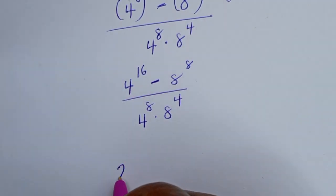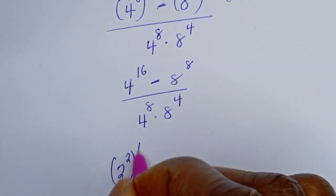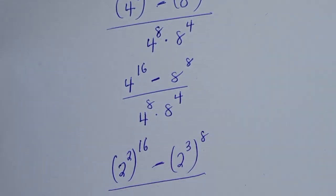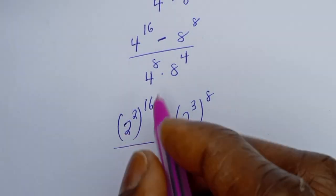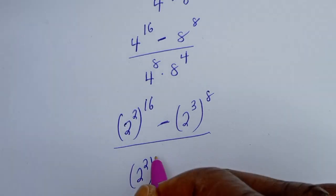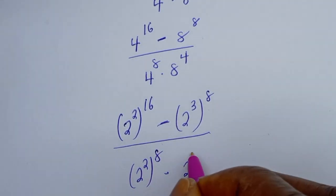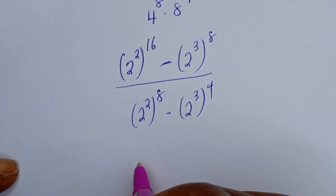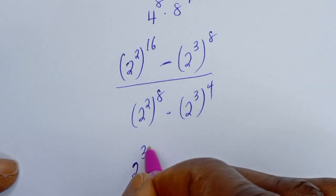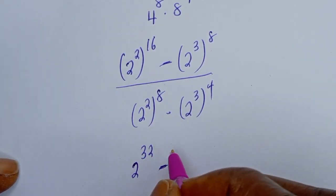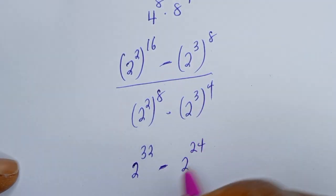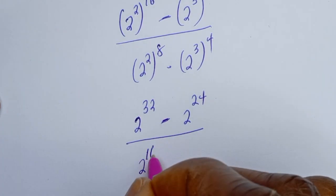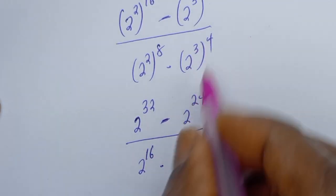Now converting everything to base 2: 4 is 2 squared and 8 is 2 cubed. So the numerator becomes 2 squared to the power of 16, minus 2 to the power of 3 to the power of 8. The denominator becomes 2 squared to the power of 8, multiplied by 2 to the power of 3 to the power of 4. This simplifies to 2 to the power of 32 minus 2 to the power of 24, divided by 2 to the power of 16 multiplied by 2 to the power of 12.